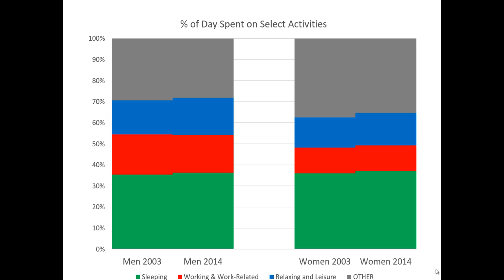Looking at these results, a few things become clear. Both groups are spending a little bit more time sleeping today than previously. Men are spending a little less time doing work and work-related activities, although their overall amount of time is greater than women. But women are spending a little bit more time overall doing work and work-related activities. We see both groups are spending more time doing relaxing and leisure activities.